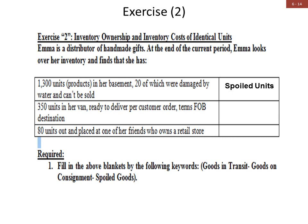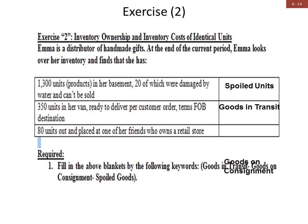So the 350 units are still owned by Emma because the agreement is FOB destination. The 80 units placed at her friend's retail store are goods in consignment — Emma gave those 80 units to her friend to sell on Emma's behalf in return for a commission. Those 80 units represent goods on consignment and are still owned by Emma.